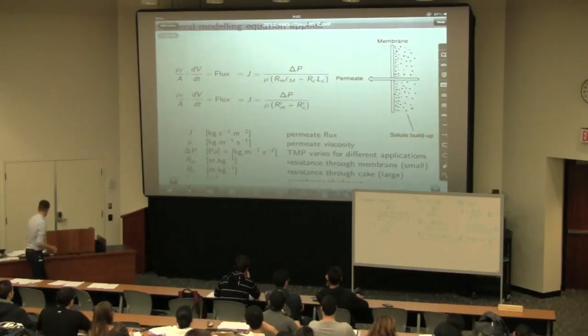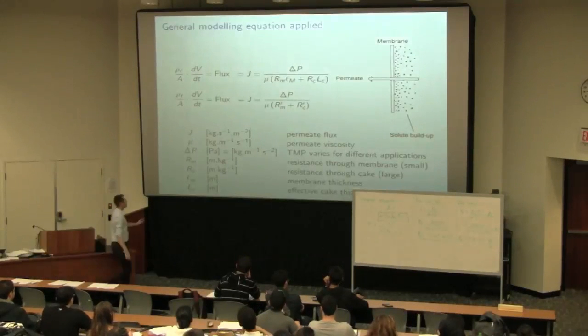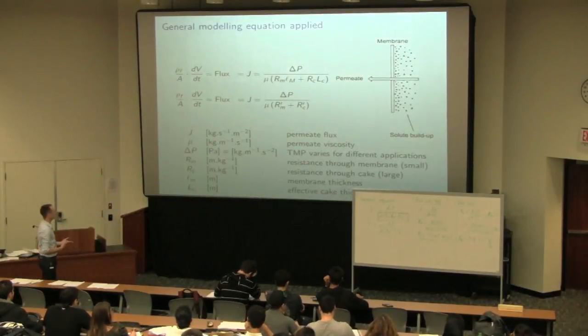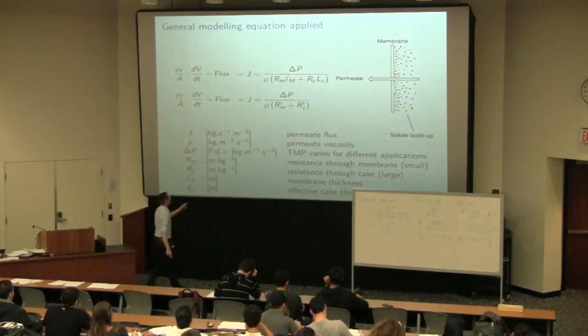We have the units here for RM and RC are given in meters per kilogram. So if we're calculating the units of RM dash, RM dash means the product of the thickness of the membrane multiplied by RM. So meters squared per kilogram is expected as our units.